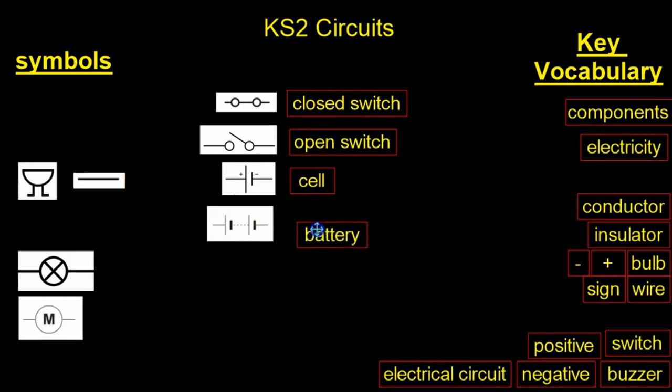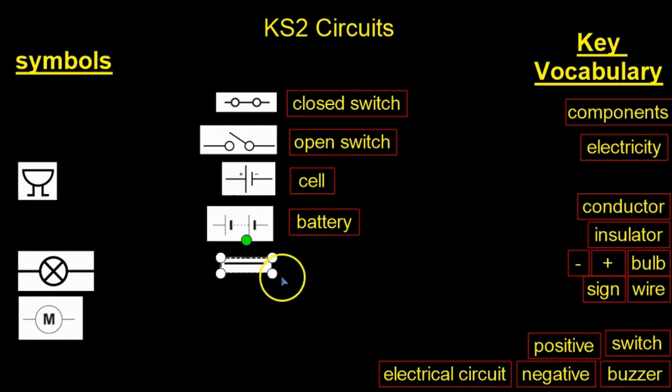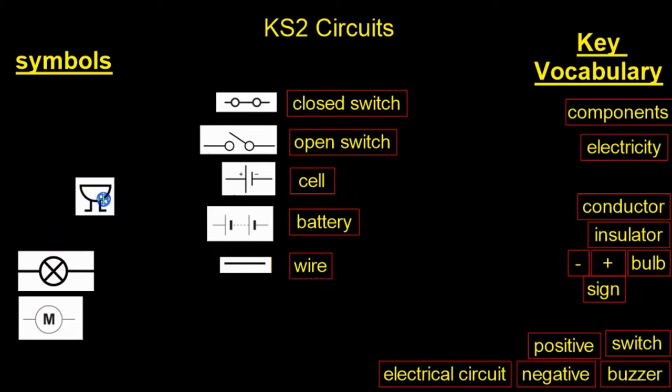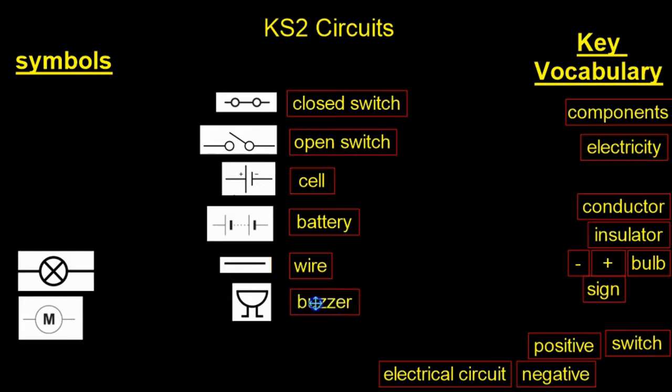Then we get to something very basic—you can't have a circuit without it: wire. This is the word wire. Then you have some more interesting circuit components. You have this one here, which is a buzzer. This is the symbol for a buzzer, and this is the word buzzer.